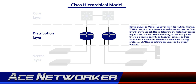Most policies are implemented at the distribution layer. These include routing, access lists, packet filtering, queuing, security and network policies, address translation, firewalls, redistribution between routing protocols, VLANs, and defining broadcast and multicast domains.